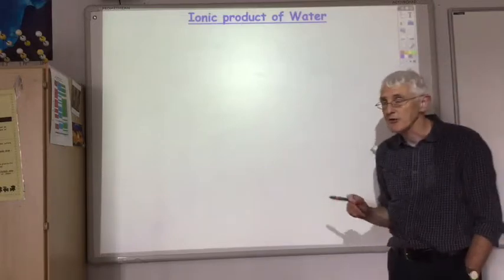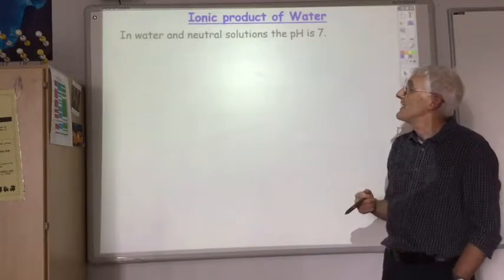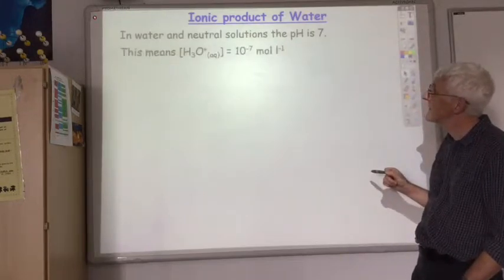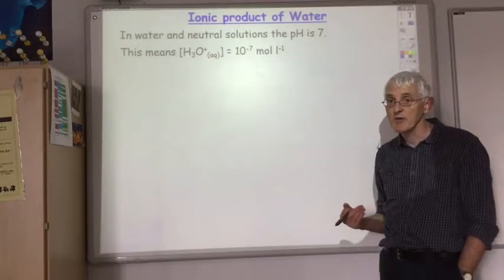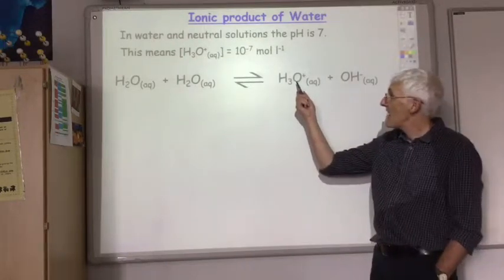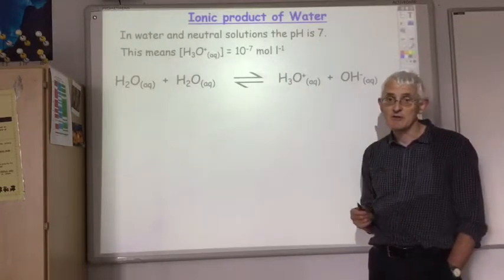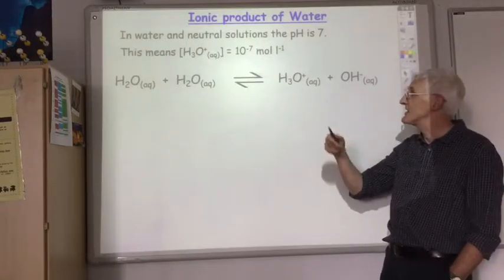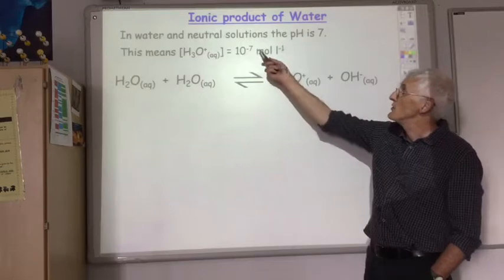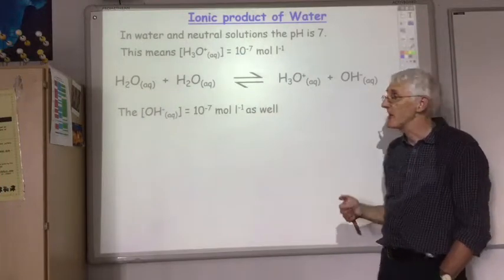We're going to look at the ionic product of water now. Water and all neutral solutions have a pH of 7, so that tells us the hydrogen ion concentration is 10 to the minus 7 moles per litre. Every time a hydrogen ion or hydronium ion is produced, a hydroxide ion is also produced. So at pH 7, the hydroxide ion concentration equals the hydrogen ion concentration, which is 10 to the minus 7.